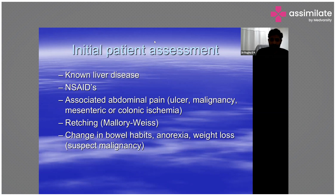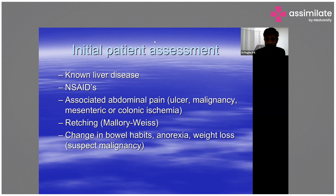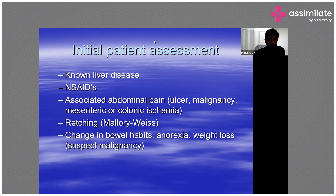Along with ABCs and resuscitation, initial assessment should determine whether the patient has known liver disease or has been taking NSAIDs such as Advil, Aleve, Motrin, ibuprofen, or naproxen, as these increase bleeding risk. Associated abdominal pain points more toward an ulcer, ischemic colitis, mesenteric ischemia, or malignancy.